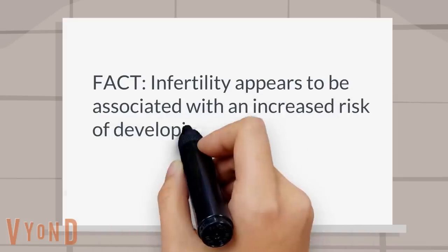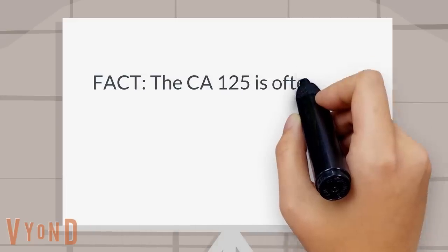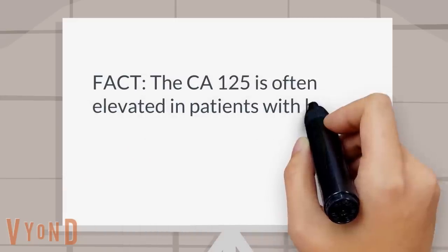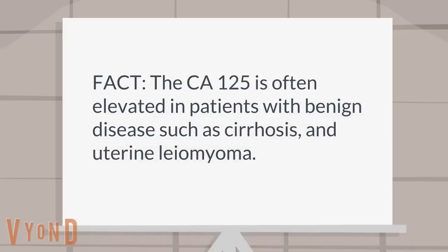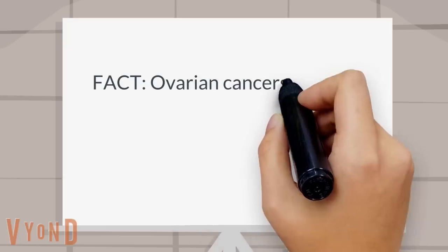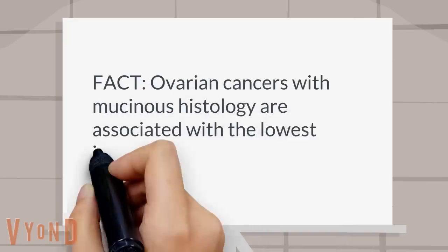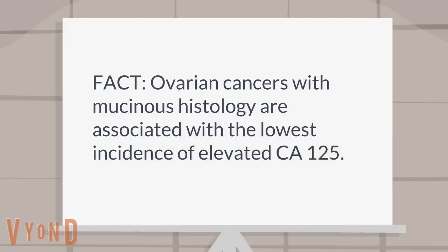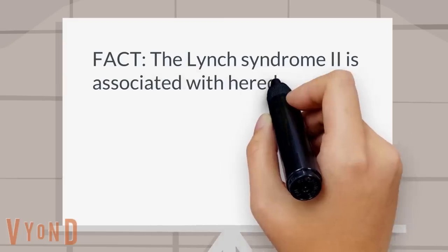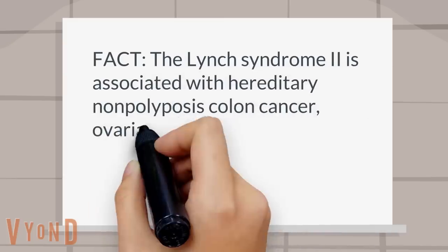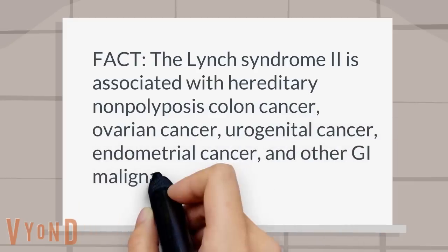Fact: Infertility appears to be associated with an increased risk of developing epithelial ovarian cancer. Fact: The CA-125 is often elevated in patients with benign disease such as cirrhosis and uterine leiomyoma. Fact: Ovarian cancers with mucinous histology are associated with the lowest incidence of elevated CA-125. Fact: Lynch syndrome II is associated with hereditary non-polyposis colon cancer, ovarian cancer, urogenital cancer, endometrial cancer, and other GI malignancies.